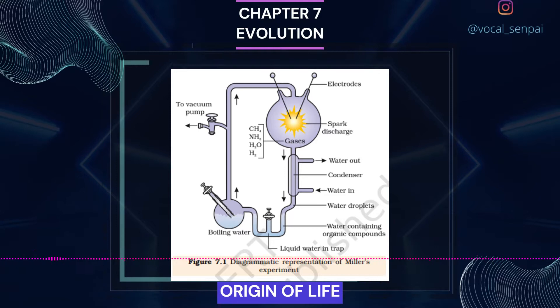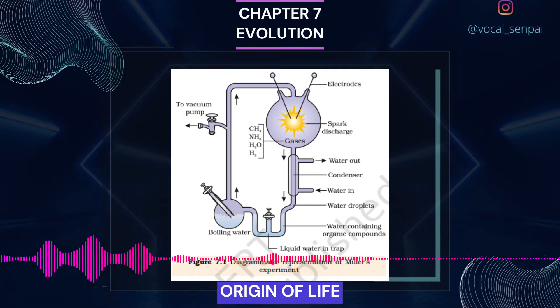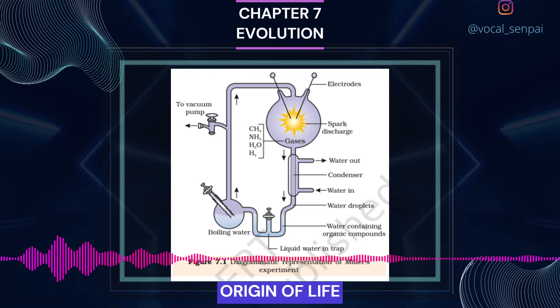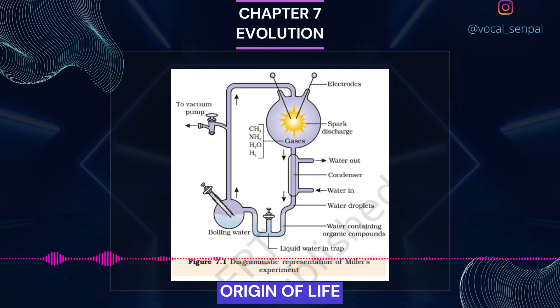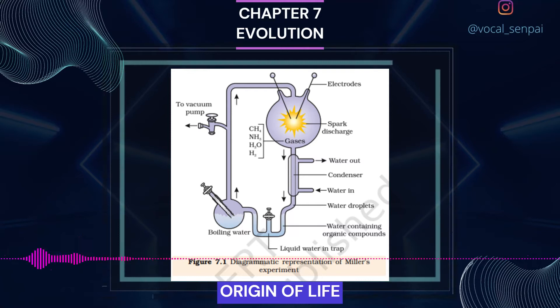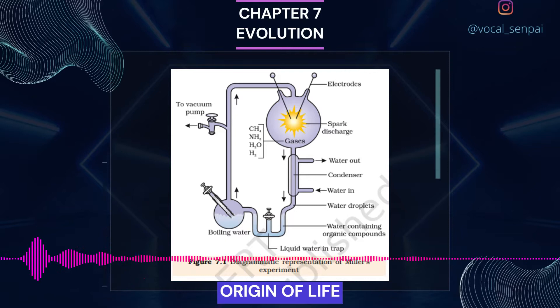The Big Bang theory attempts to explain the origin of universe. It talks of a singular huge explosion unimaginable in physical terms. The universe expanded and hence the temperature came down. Hydrogen and helium formed sometime later. The gases condensed under gravitation and formed the galaxies of the present-day universe. In the solar system of the Milky Way galaxy, Earth was supposed to have been formed about 4.5 billion years back.